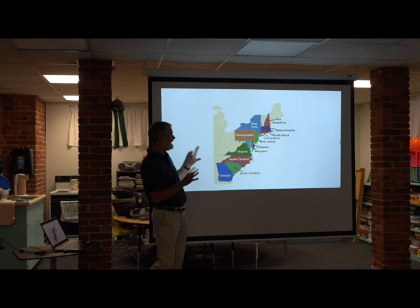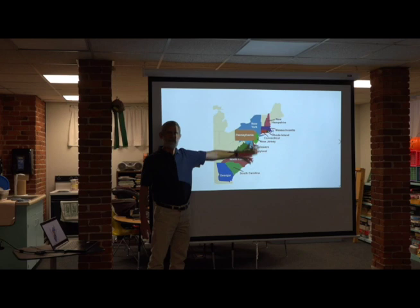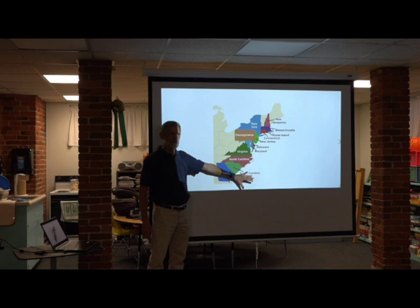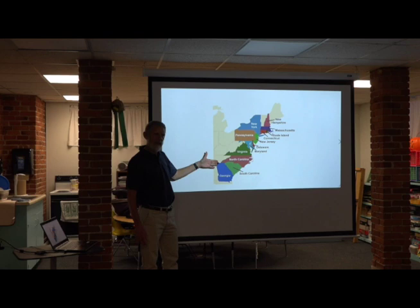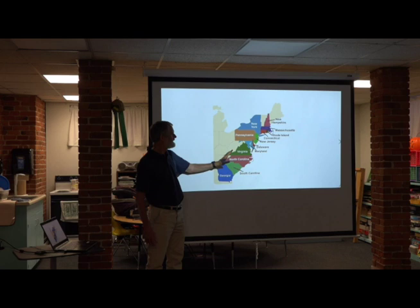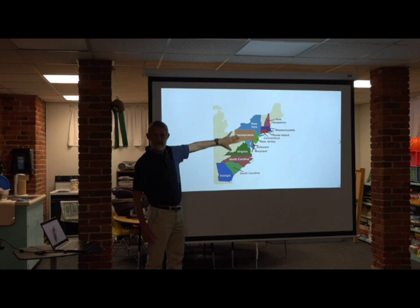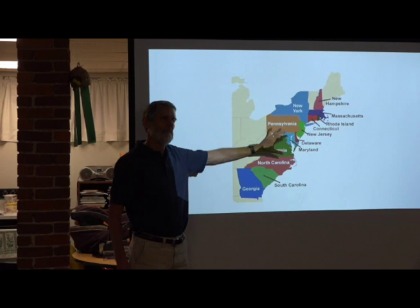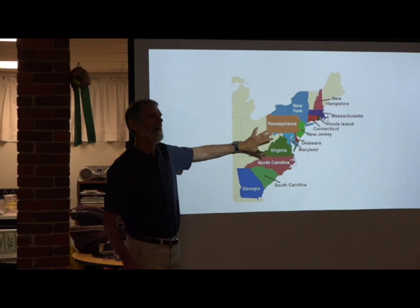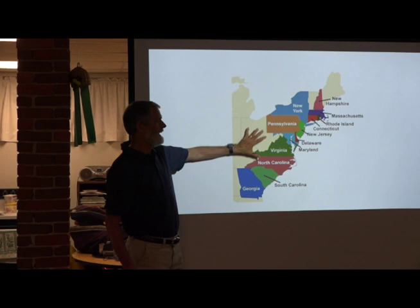A couple things to note about the original 13. One is that we're a seaboard setup — the orientation of all the colonies at first was to the Atlantic, particularly to Britain. The other part of the map is the border on the west, which is basically the Appalachian Mountains. This is going to be a big deal because after independence — well, even before — the Brits tried to control settlement west of the Appalachians.